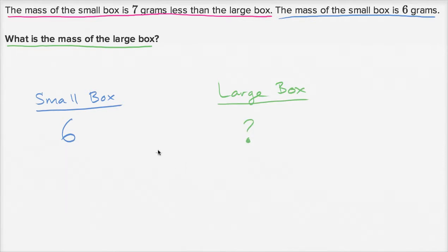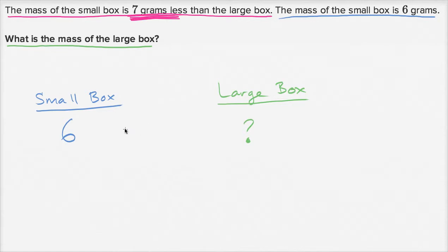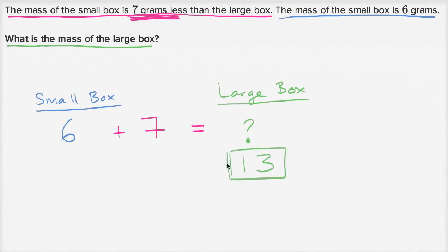Like we did in the last problem, is the large box going to have a larger or smaller mass? We shouldn't just look at the names of the boxes — we should look at what they tell us. The mass of the small box is seven grams less than the large box, which means the large box is seven grams more than the small box. So the small box is six grams plus seven grams — that's seven grams more — which equals the mass of the large box. Six plus seven is 13. And we're done.